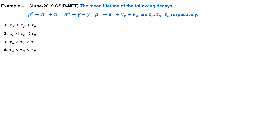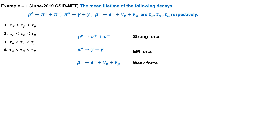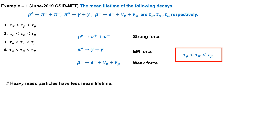In the June 2019 CSIR NET exam, a question was asked about the mean lifetime of certain decay reactions, asking for the correct order. To solve this, we first need to identify which force governs each decay. The first reaction is due to strong force, the second is due to EM force, and the third reaction is due to weak force. So in the first reaction the particle will decay fastest — its mean lifetime will be the shortest — while in the third reaction due to weak force the particle will decay slowly, giving the longest lifetime. So option 3 is the correct order. Additionally, the more massive the particle, the greater the probability of decay into lighter mass particles, meaning massive particles have the shortest lifetime.